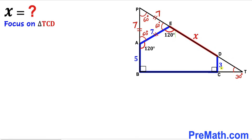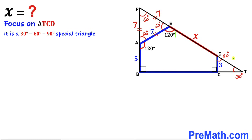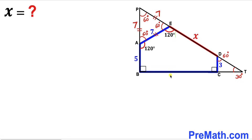Let's also focus on the tiny right triangle TCD. Angle T is 90 degrees and angle D is 30 degrees, so angle C must be 60 degrees. Therefore triangle TCD is also a 30-60-90 special triangle. We can observe that the whole side PB equals 7 plus 5, giving us 12 units.